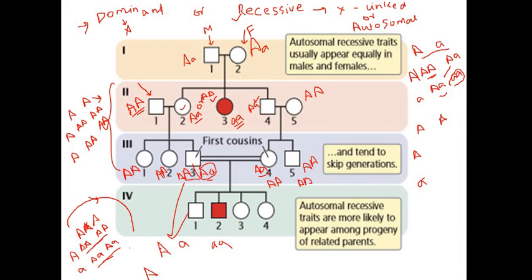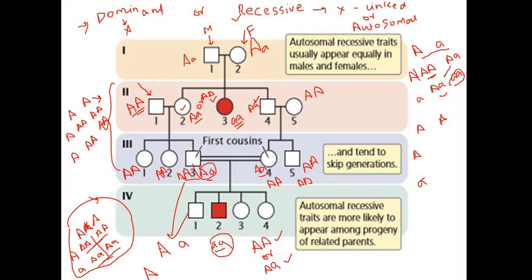If individual 2 is heterozygous and marries individual 1 who has both normal alleles, using a Punnett square we get 50% normal and 50% carrier offspring — so individual 3 in generation 3 is a carrier. Similarly, if individual 4 is heterozygous and marries individual 5 who is normal, we again get 50% carrier and 50% normal. When these two carriers — 3 and 4 — have children, they produce a child with the disorder phenotype.